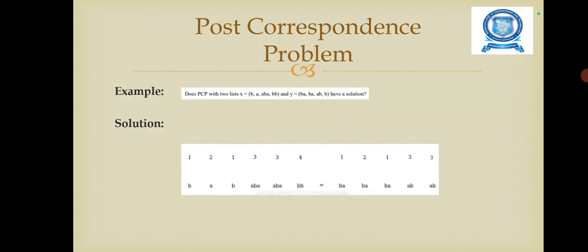Next we are going to see one example for the Post Correspondence Problem. In this example we are going to show how the strings of two lists can make a solution. Does PCP with two lists X equals b, a, ab, bb and Y equals ba, b, ab, b.